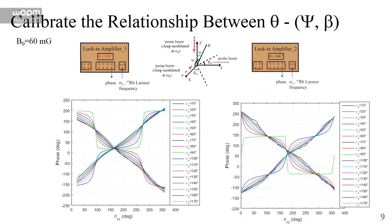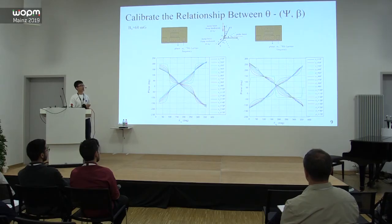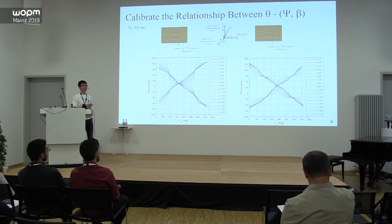We can generate a similar database for the second lock-in amplifier, but the lines in this figure are acquired when we fix ξx and scan βyz. So for the first lock-in amplifier we scan around the Z-axis, and for the second lock-in amplifier we scan around the X-axis.